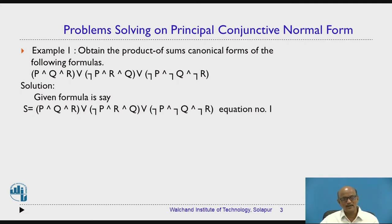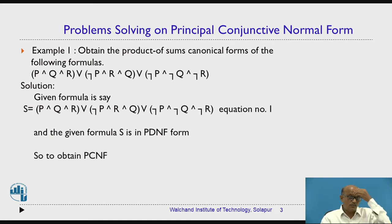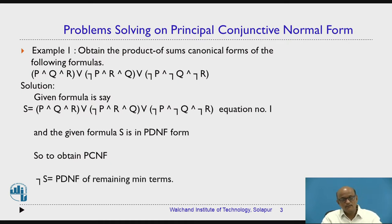Now we have to obtain PCNF. To obtain PCNF from the given PDNF, we take negation S. That negation S is nothing but the principal disjunctive normal form of the remaining minterms. As we know, there are three minterms in the formula. For three variables, there are eight minterms total. Three are already utilized in the PDNF, so the remaining five minterms are there, and we have to take those in a summation.